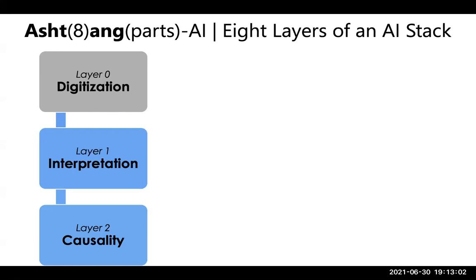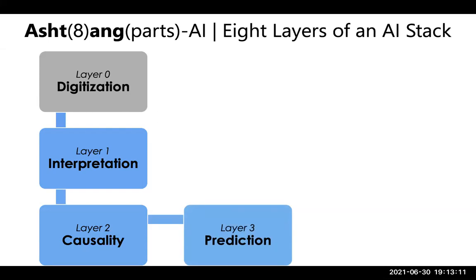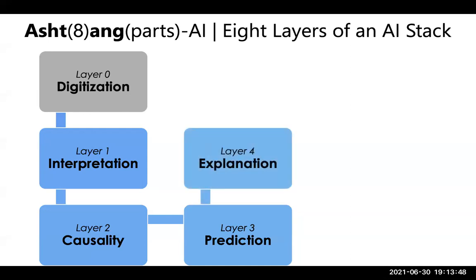The third layer is the prediction layer. Once you understand causality, you understand prediction — this happened in the past, therefore this will happen in the future. Prediction is a past-to-future paradigm. We use classifiers and regression models in both interpretation and prediction, but interpretation converts current data to a higher semantic form, while prediction forecasts future outcomes from past data. Prediction depends on causality.